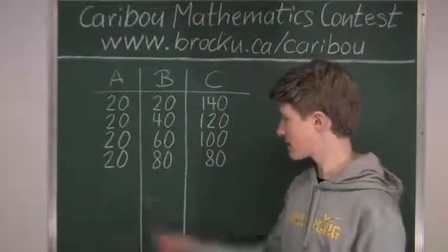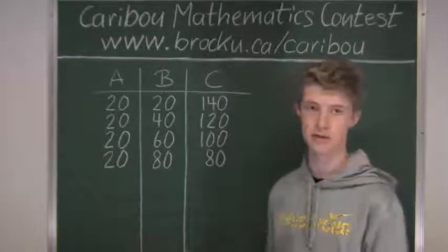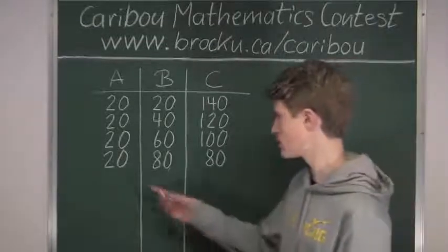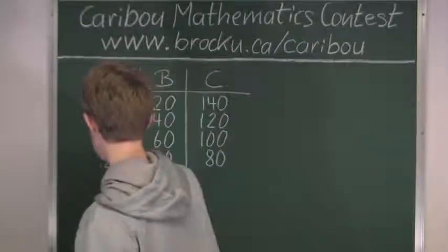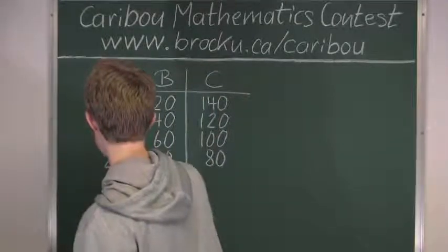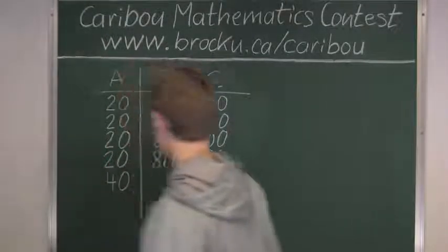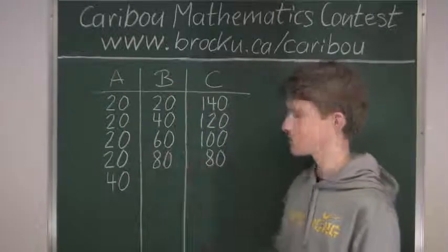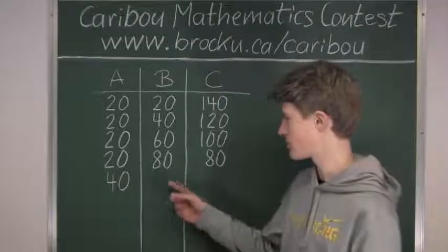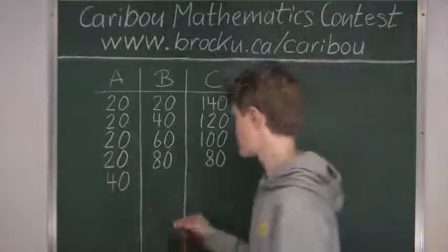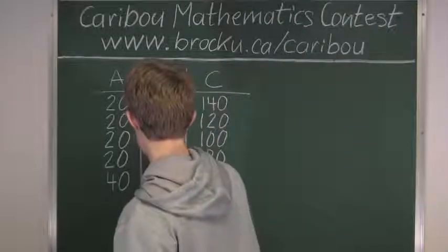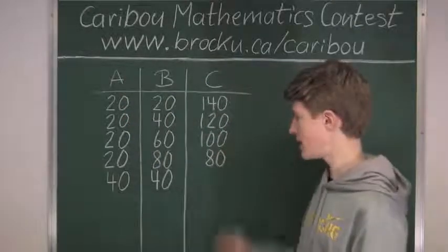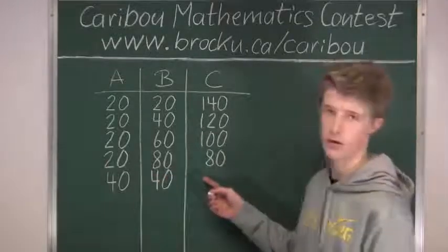Okay, so now we will take the next smallest possible value for A, which is just add 20, because there are multiples of 20, so 40. And then here we know that B can be the smallest possible value. Now for B, it's 40, because it has to be greater than or equals to A.